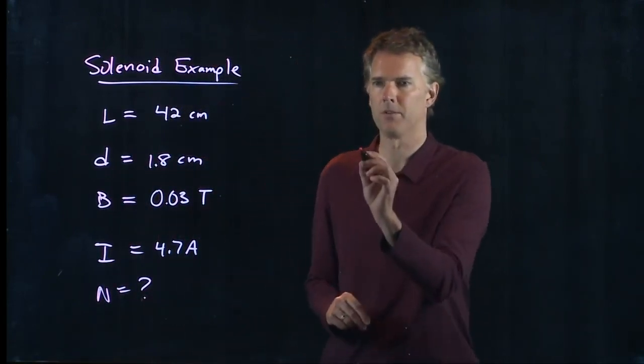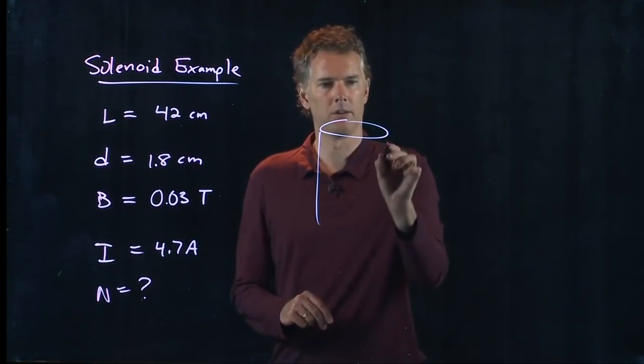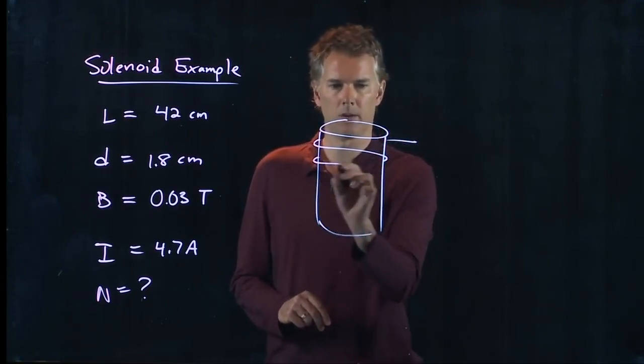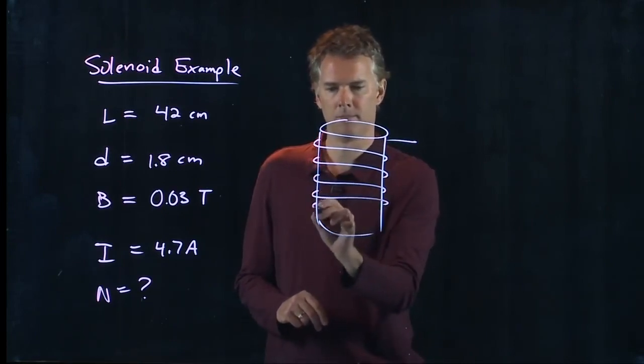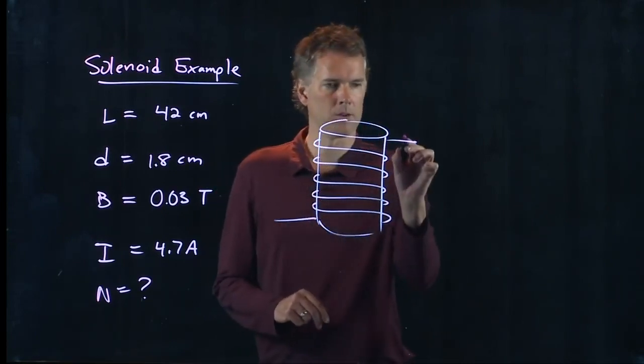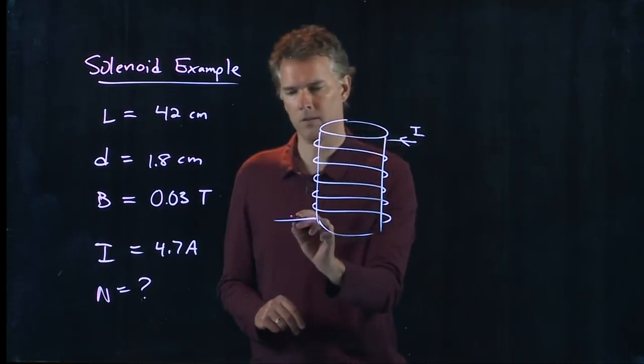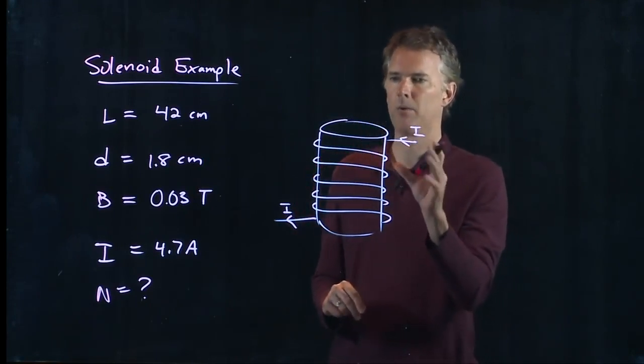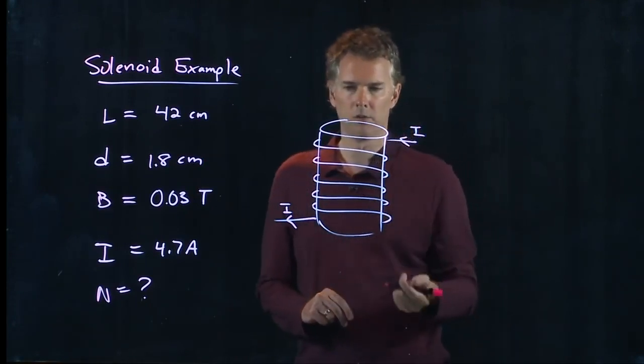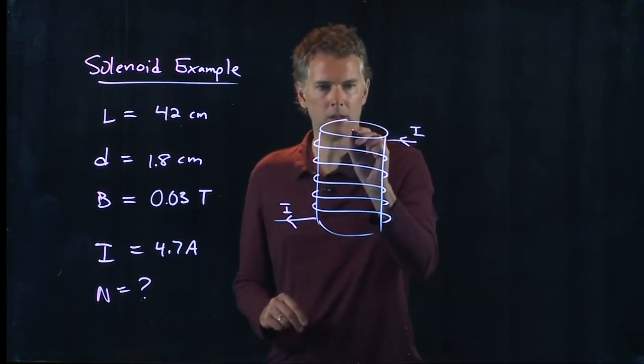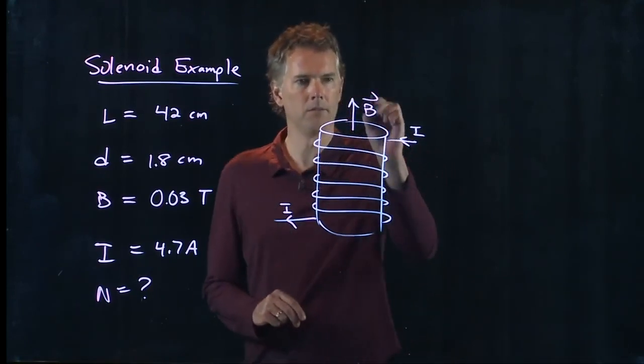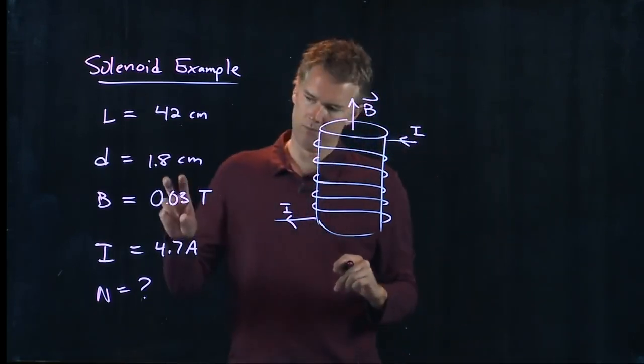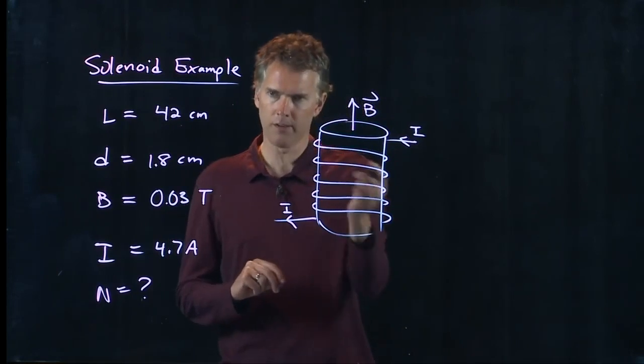This doesn't seem too bad. Let's draw a picture of this thing first off. Here's our cylinder, we have current carrying wire going around and the current comes back out. If I is wrapping around in this direction you can use the right-hand rule to determine the direction of B and you should get B like that.